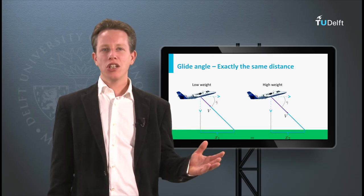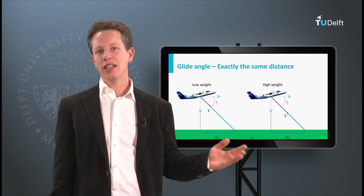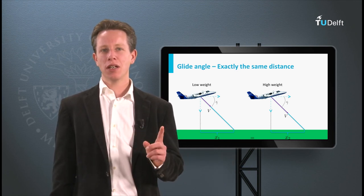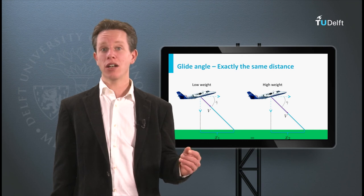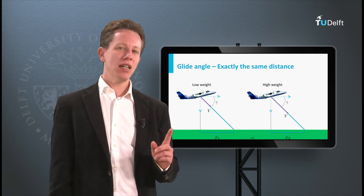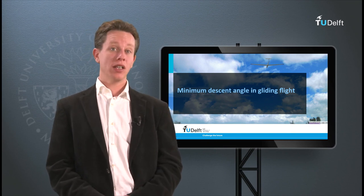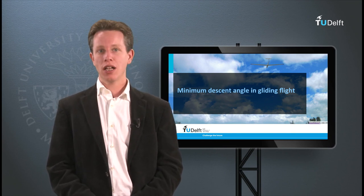Now this concludes the calculation of the minimum descent angle in gliding flight. In the end we just touched upon the time aspect as well, when considering different aircraft weights. And this time aspect will play a major role in the next video, when I will address the maximum rate of climb problem.